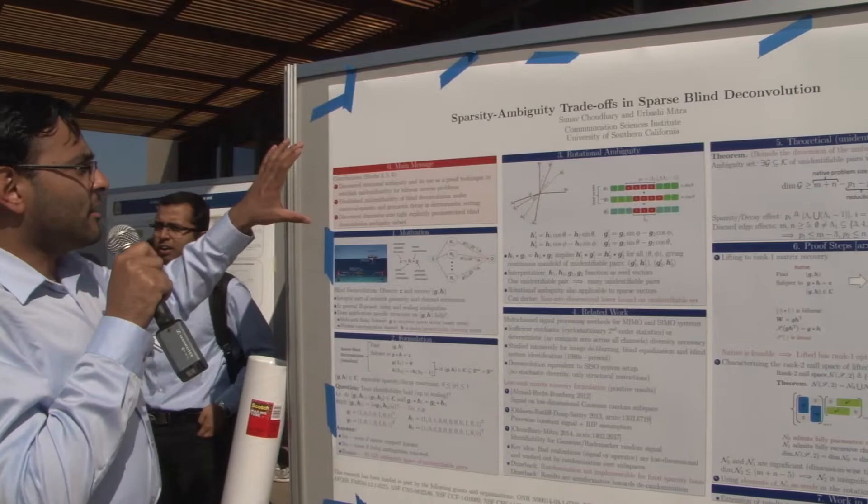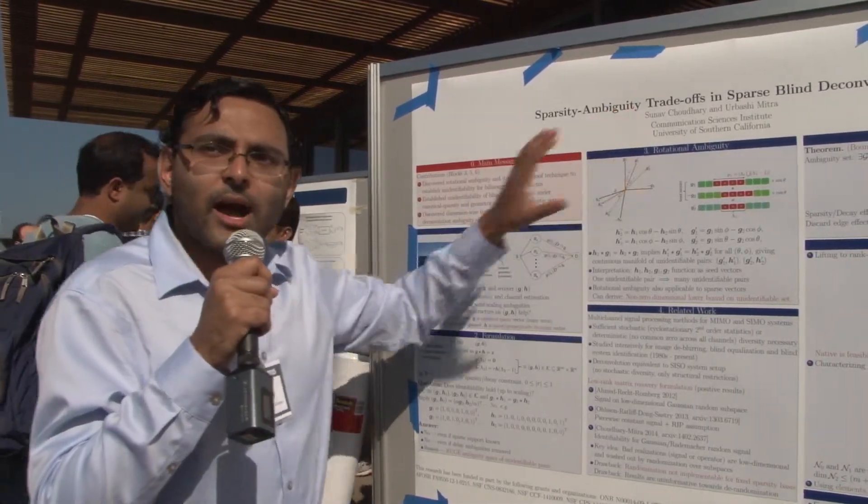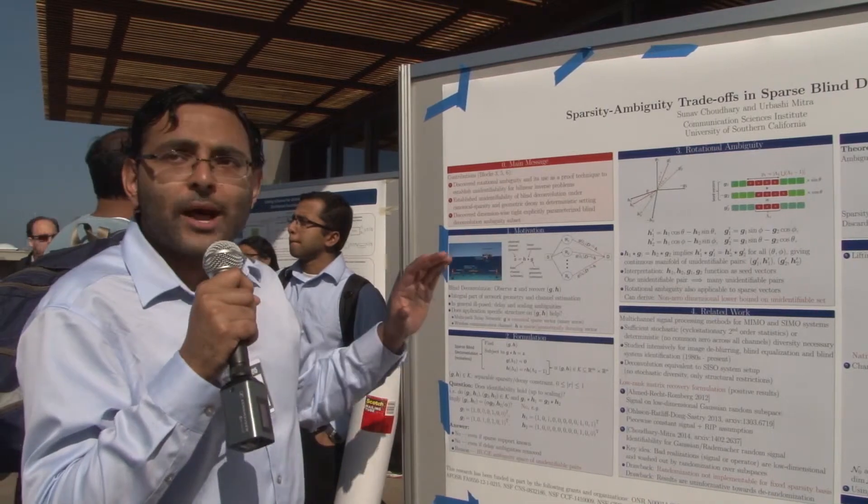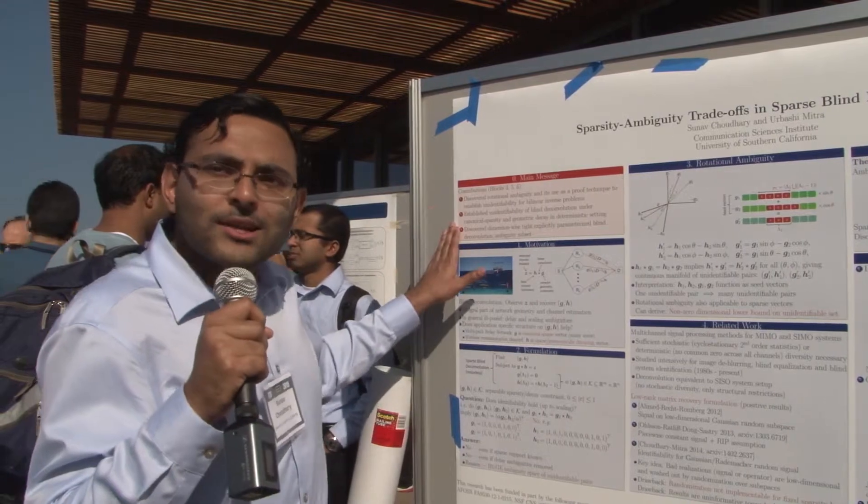To summarize, our key contributions are: we identified the rotational ambiguity as a key proof technique and used it to analyze blind deconvolution under geometric decay and canonical sparsity.